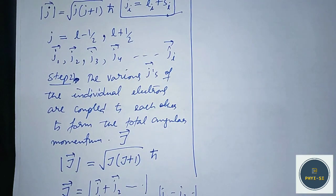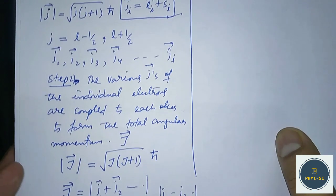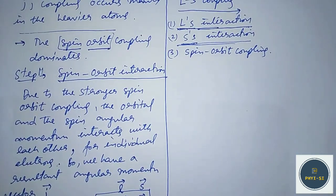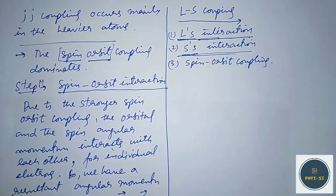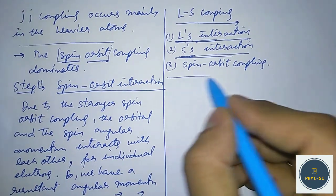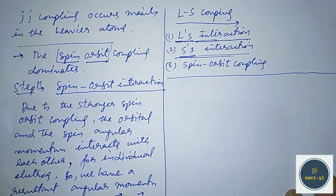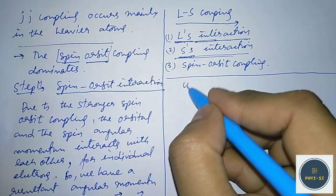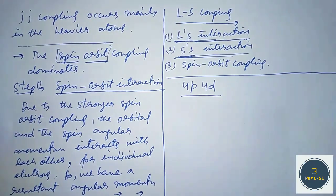So these are the two steps in JJ coupling. Let us see an example, and all of the things will be clear. Let's take a 4P and a 4D electron.